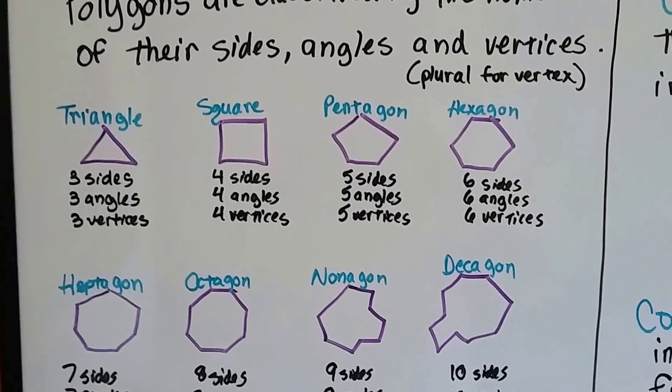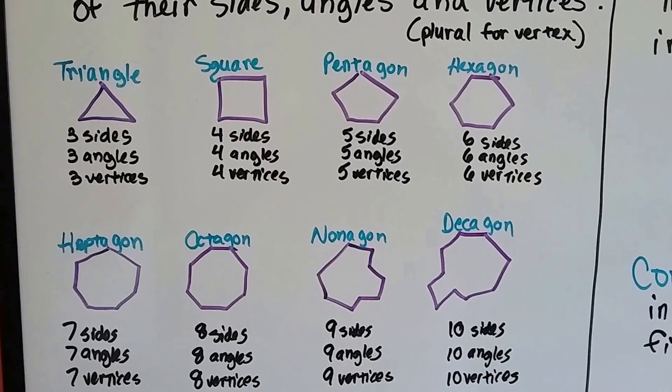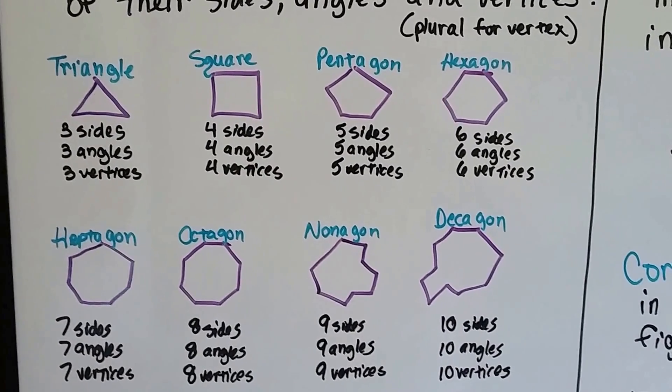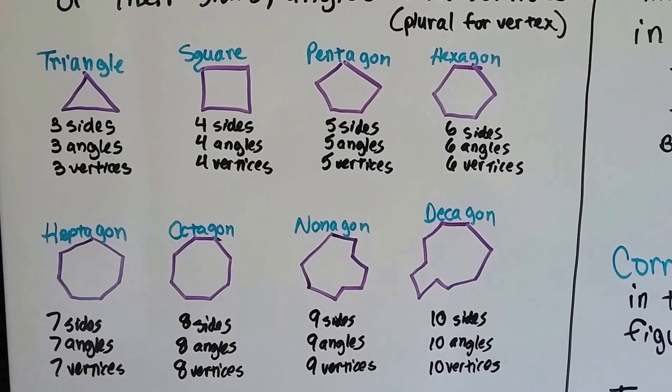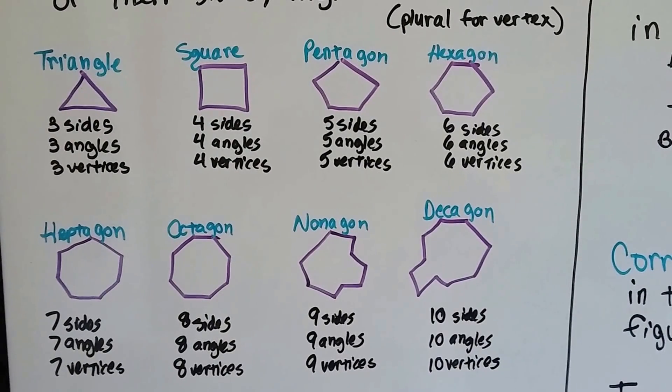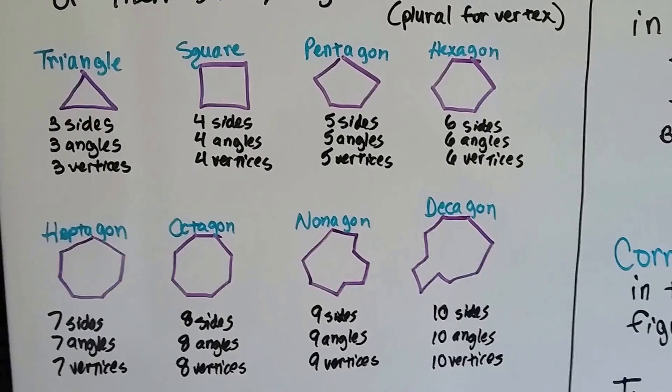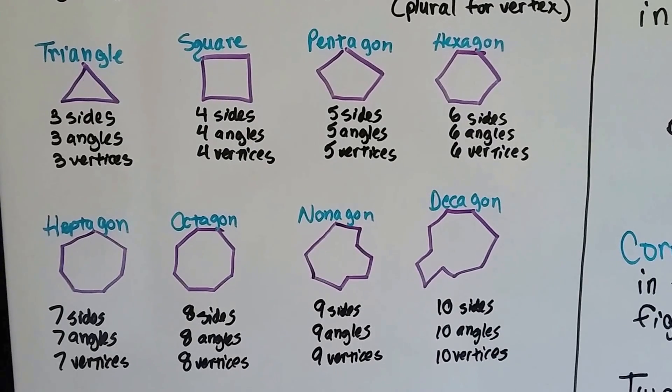Triangle has 3 sides, 3 angles, 3 vertices. Square has 4, 4, and 4. Pentagon is 5, 5, and 5. Hexagon, 6 sides, 6 angles, 6 vertices.